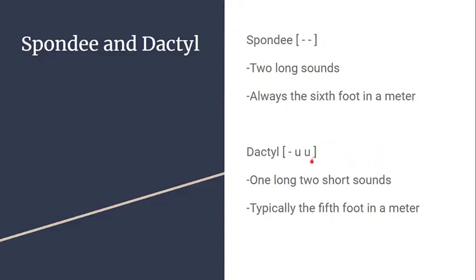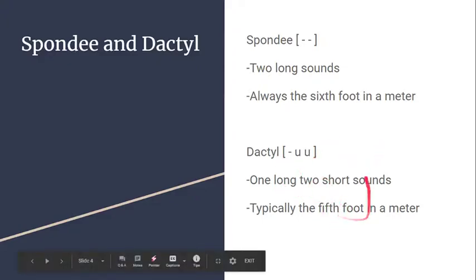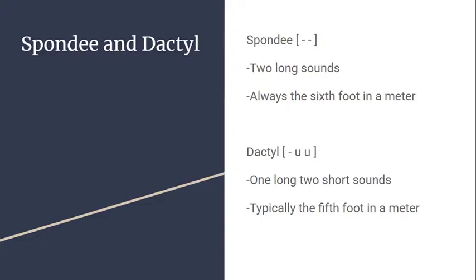The dactyl, right there in the name 'dactylic,' is represented by dash-uu — one long and two short sounds. In the Aeneid's opening line, 'arma virum que,' it starts off with a dactyl: 'ar-ma-vi,' long-short-short. Typically about 95% of the time, the fifth foot in the meter will be a dactyl leading right into that spondee, giving you long-short-short, long-long.